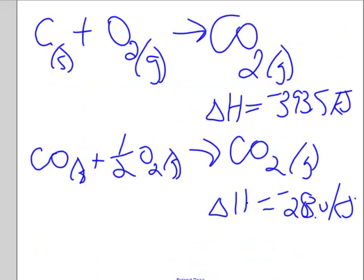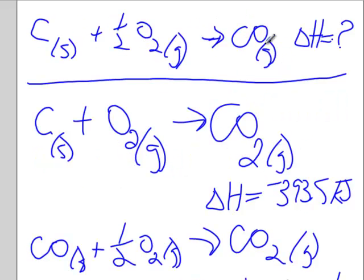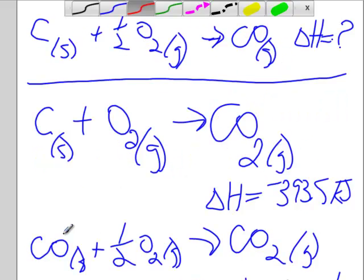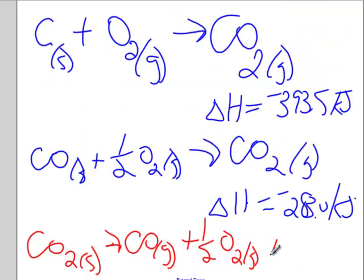This is just like doing simultaneous equations in math class. So, I look at this, and I know I'm going to want CO on the product side. I'm going to take this equation and I'm going to reverse it. And the delta H for that is identical to the delta H I had before except the change in sign.